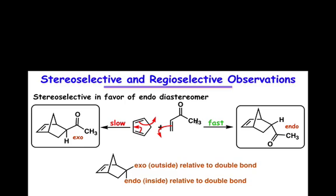Up to this point we've conveniently avoided examples in which we form stereocenters on both the former diene and the former dienophile. Now we're going to take a look at this and ask: is there any relationship between the relative stereochemistry of stereocenters on the former diene and stereocenters on the former dienophile?